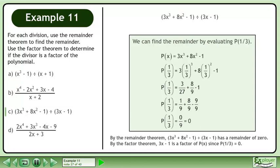By the factor theorem, 3x minus 1 is a factor of p of x since p at 1 over 3 equals 0.